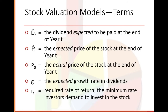Stock valuation models — terms. D-sub-T is the dividend expected to be paid at the end of year T. Note there is a hat symbol on top of P and D. P-hat-sub-T is the expected price of the stock at the end of year T. P-sub-zero, or P of zero, is the actual price of the stock. G is the expected growth rate of dividends. R-sub-S, or R of S, is the required rate of return — the minimum rate investors demand to invest in the stock.